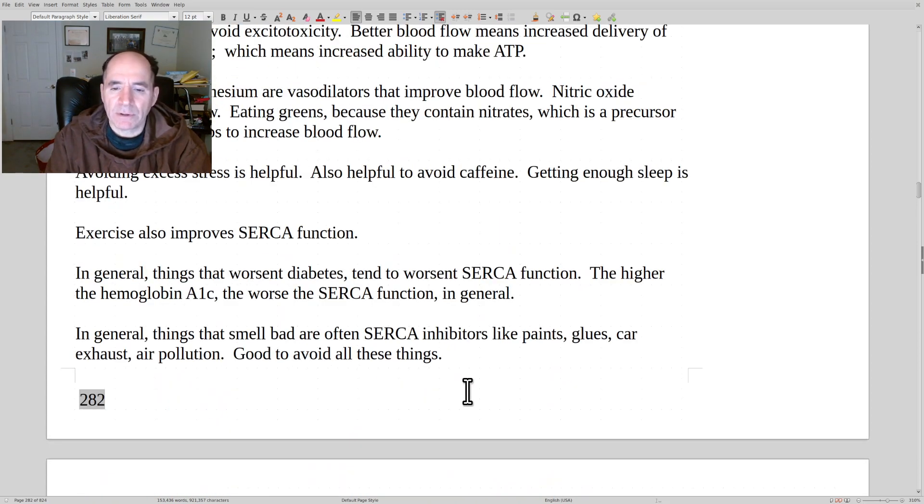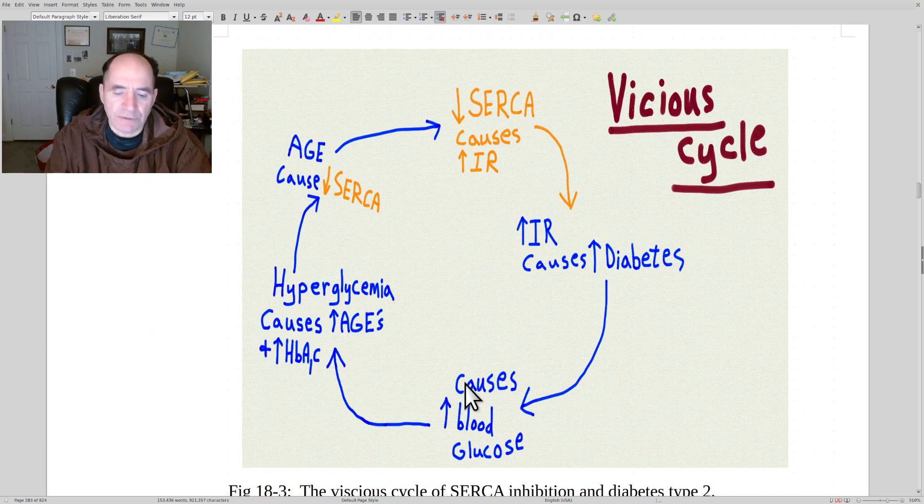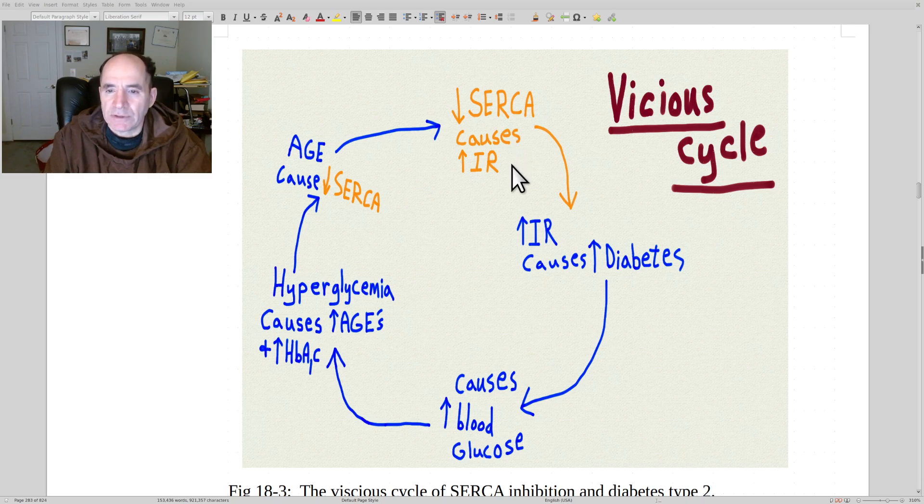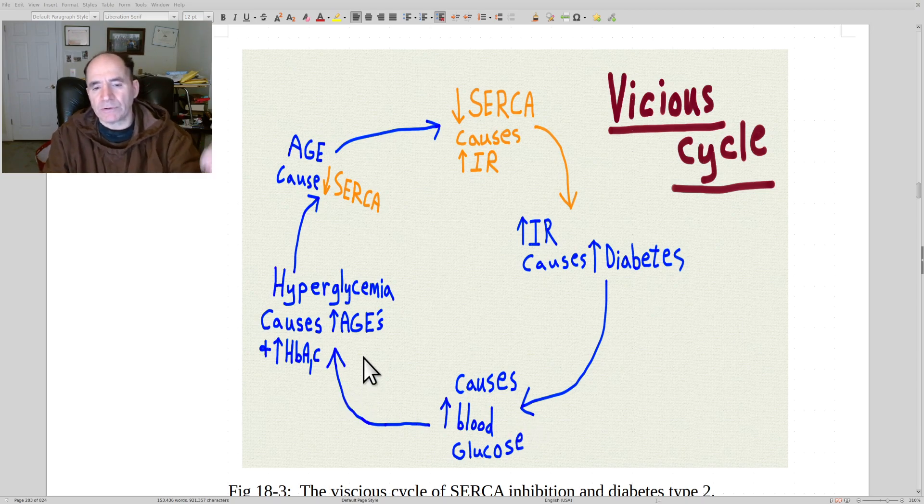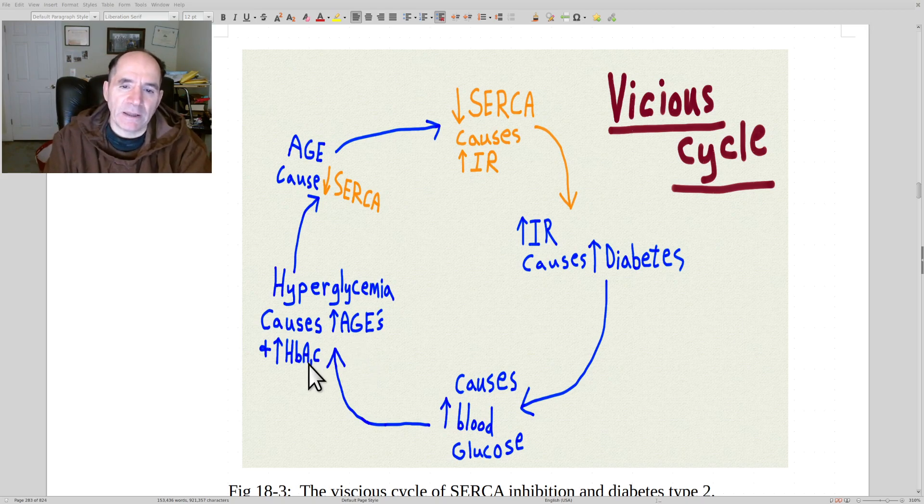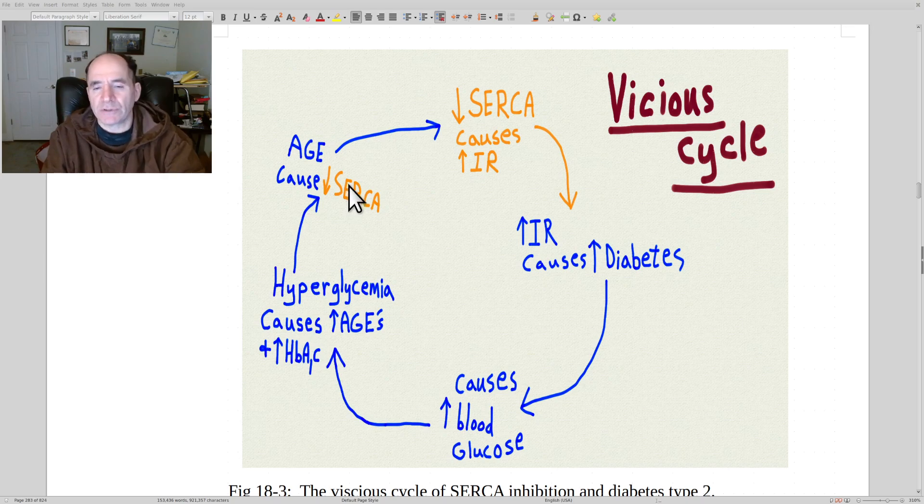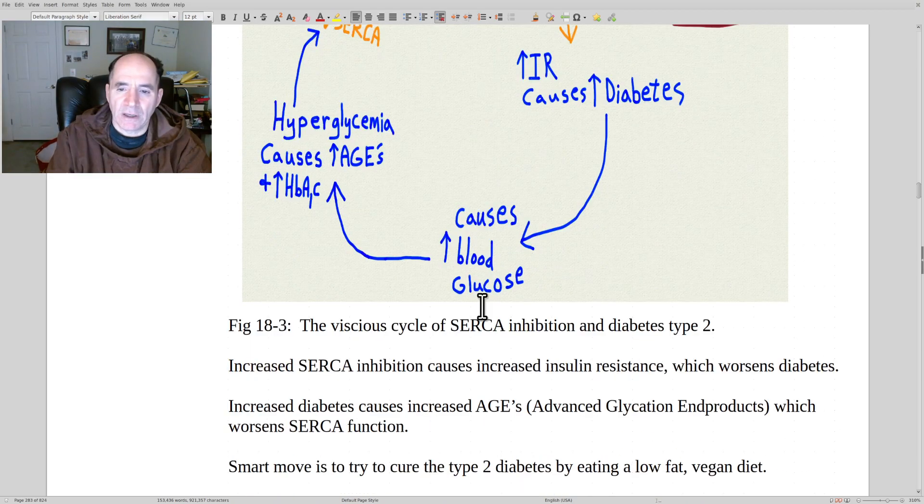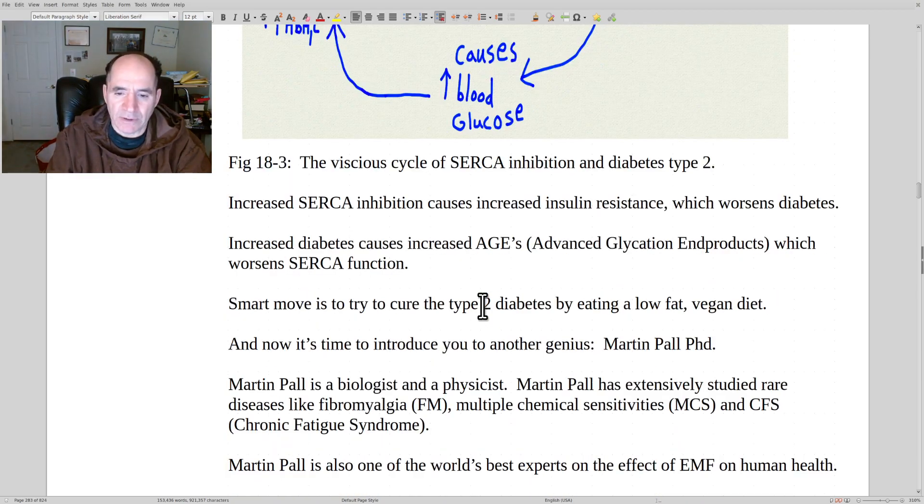Anything that increases hemoglobin A1C associated with poor blood glucose control and diabetes will tend to be a CERCA inhibitor. And that's bad because you can get into a vicious cycle. By vicious cycle, I mean a self-perpetuating cycle. Inhibitors of CERCA lead to increased insulin resistance. Increased insulin resistance causes increased diabetes, causes increased blood glucose, hyperglycemia. And the hyperglycemia then will be associated with advanced glycation end products, glycating hemoglobin and other proteins. And that's associated with decreased CERCA function. So it can cycle back on itself and progressively just get worse and worse. So you want to break the cycle by avoiding dietary fat and high dietary sodium, for example.